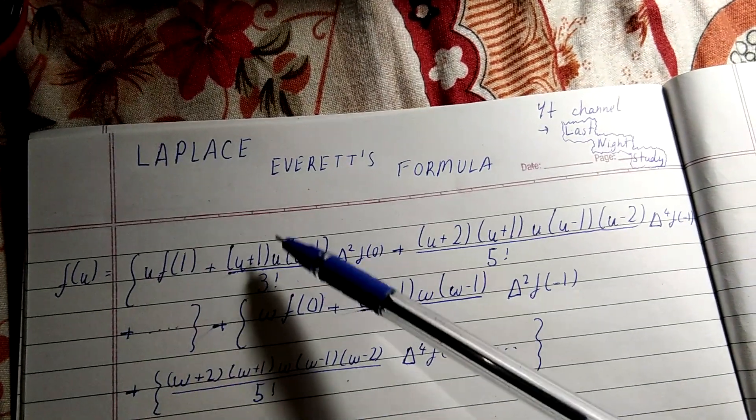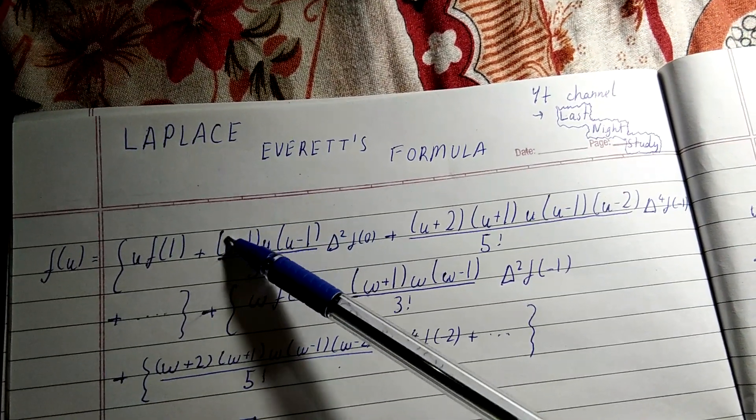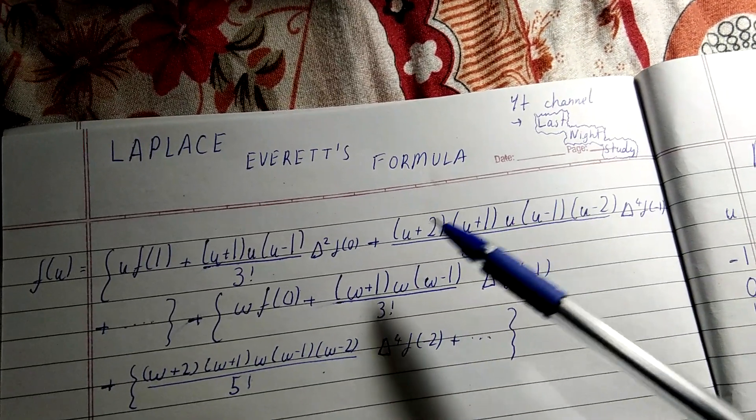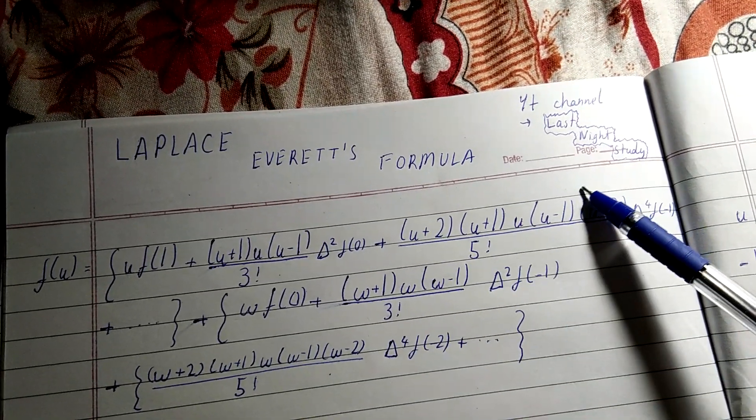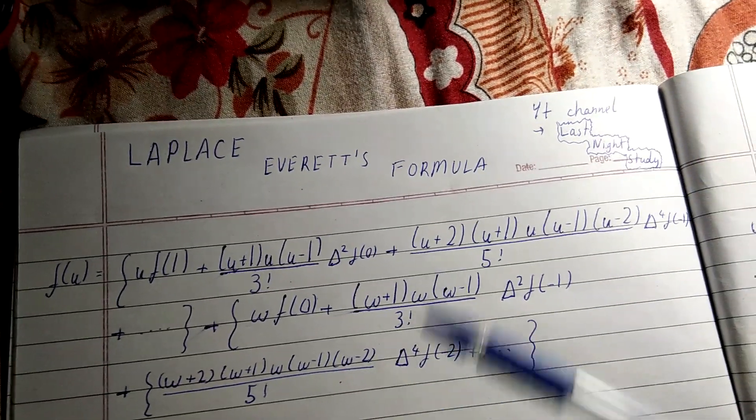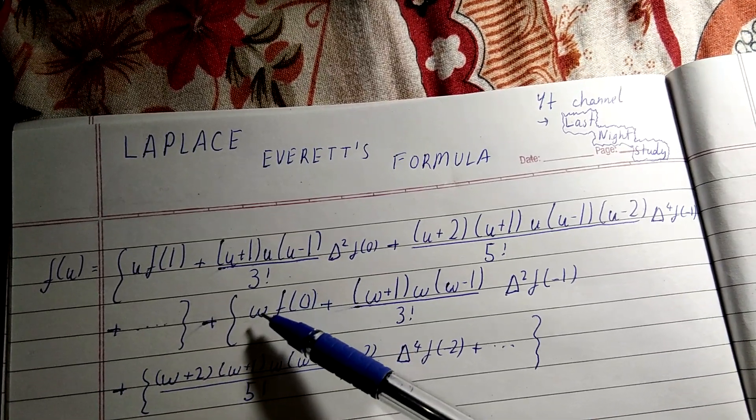So we will add on both sides. After this, we will do plus. Now here is w. You must be used to the term u in interpolation methods, but here you will get a surprise term that is w, and you must be confused about what w is.